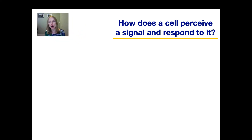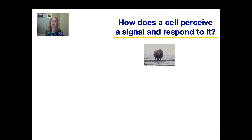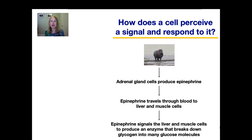Now we will talk about how a cell actually perceives a signal and responds to it. Imagine you are on a safari in Africa and suddenly come face to face with an angry hippo — this actually happened to a friend of mine when she was only 12. When you see that hippo, your brain cells signal your adrenal gland cells to produce a hormone called epinephrine, which you might have heard of as adrenaline. This epinephrine travels through your blood to liver and muscle cells and signals them to produce an enzyme that breaks down glycogen into many individual glucose molecules.